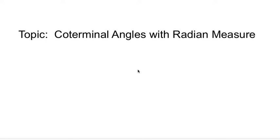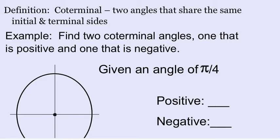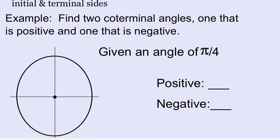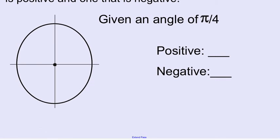We're talking coterminal angles with radian measure. Remember coterminal angles are two angles that share the same initial and terminal sides. There are numerous coterminal angles out there. We want to just find one positive and one negative. Multiple answers do exist in this problem.